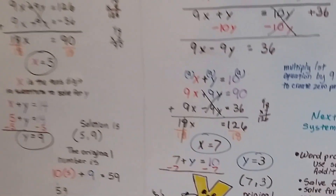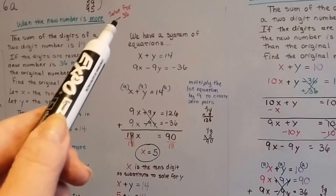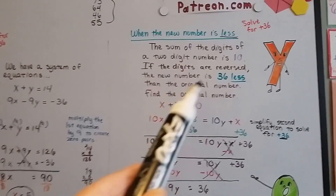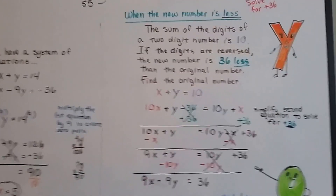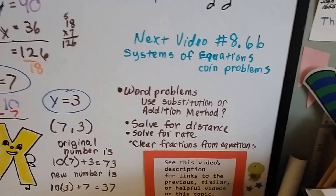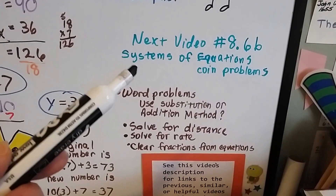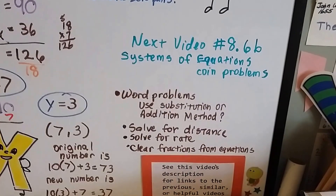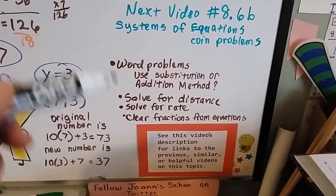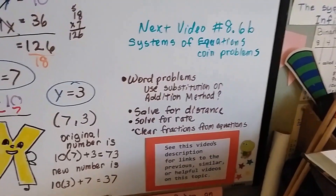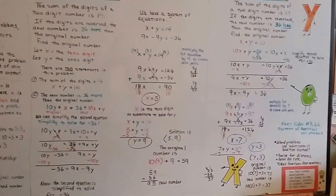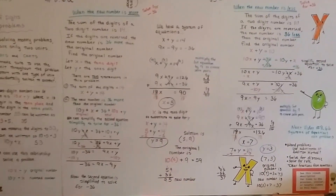The biggest thing to remember is: when the new number is more, you solve for a negative for whatever was more. And when the new number is less, you solve for a positive for whatever was less. That's the big rule. Our next video, 8.6b, is still going to be systems of equations, and we're going to be doing word problems with coins — like how many nickels and how many dimes do you have if you have this amount of money. I'll show you how to solve those with a system of equations.